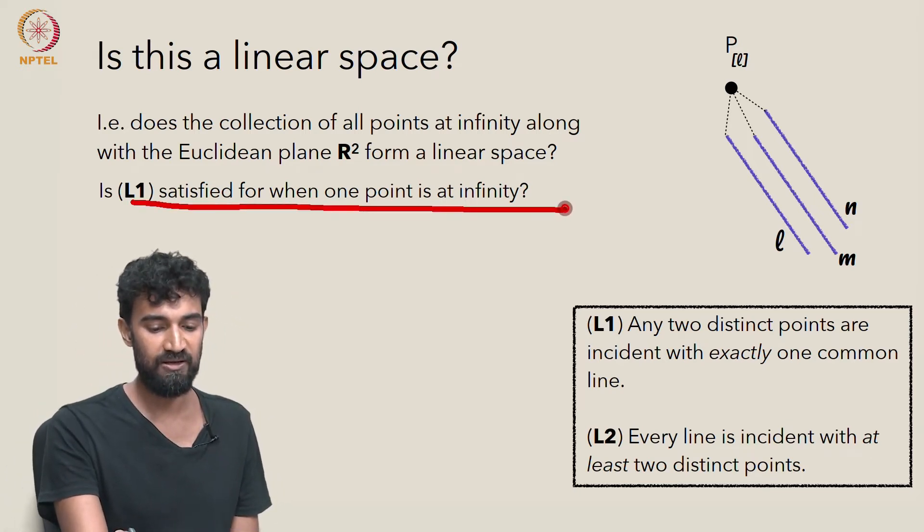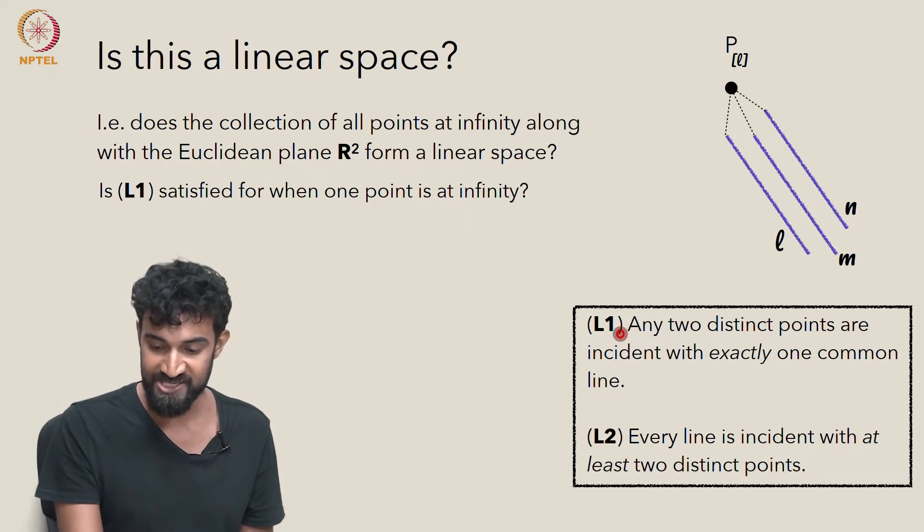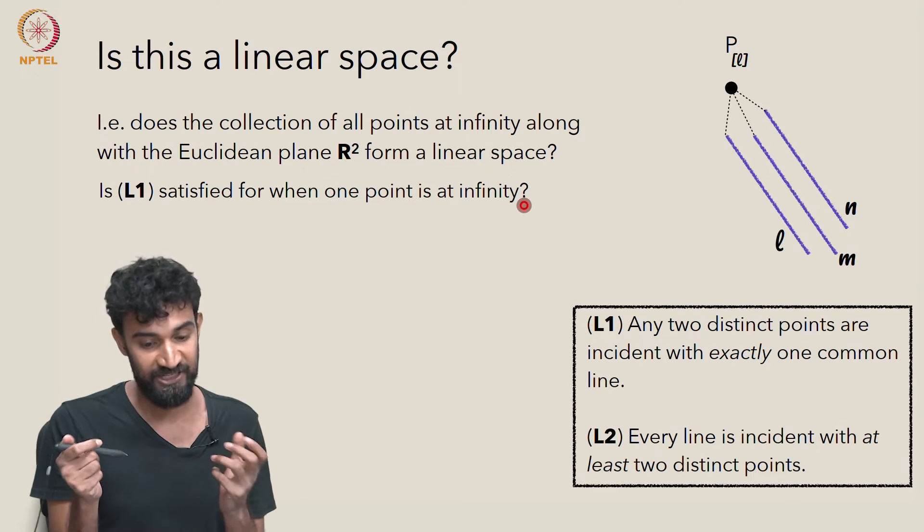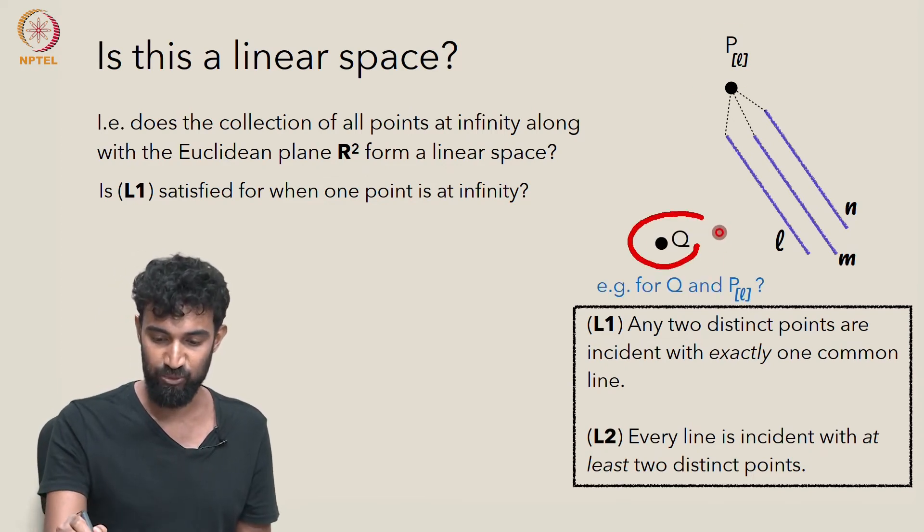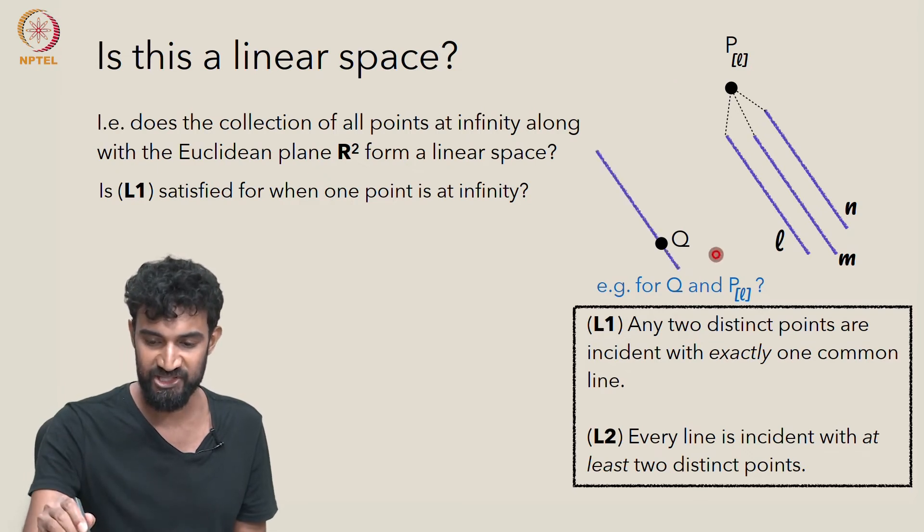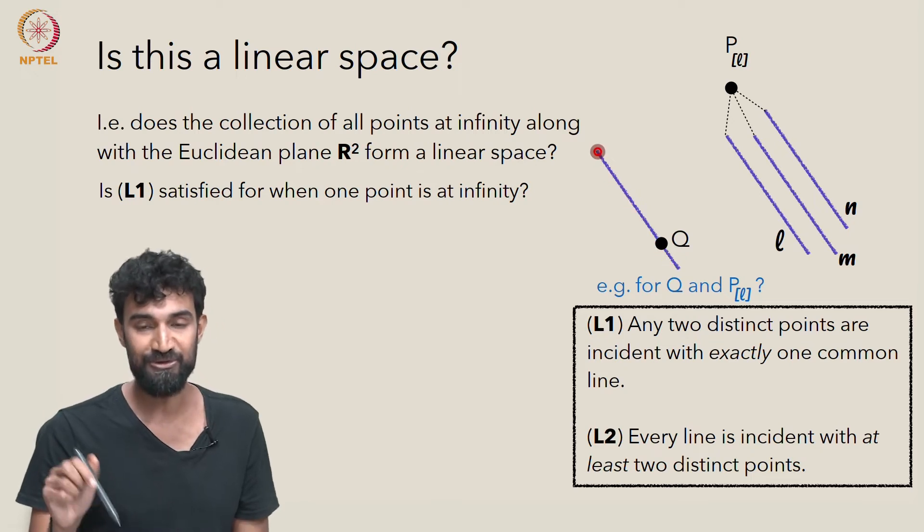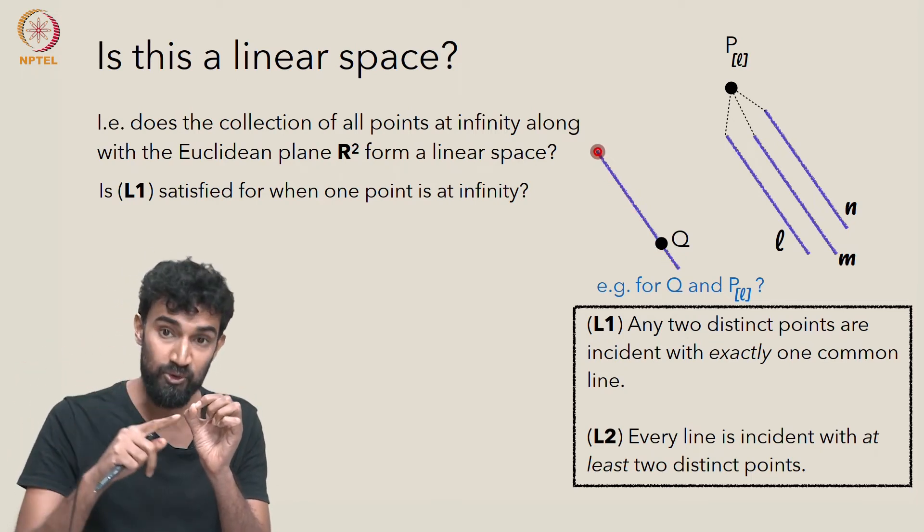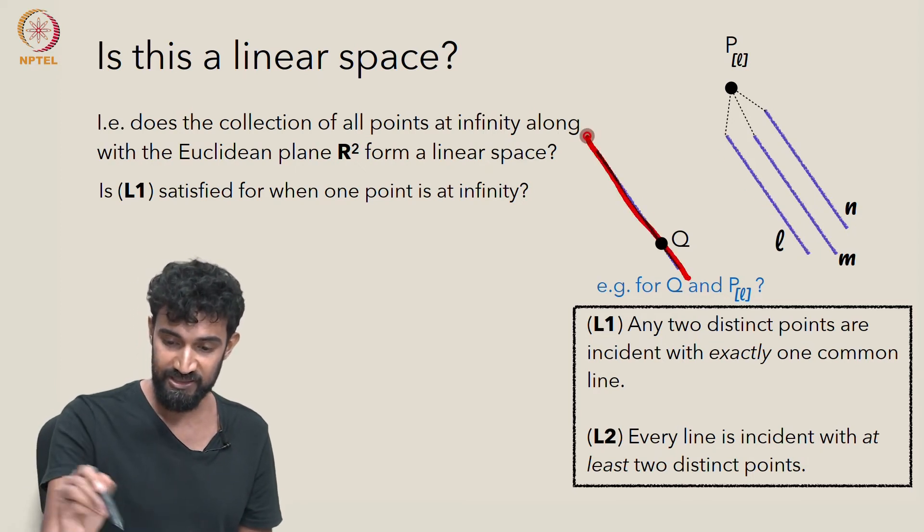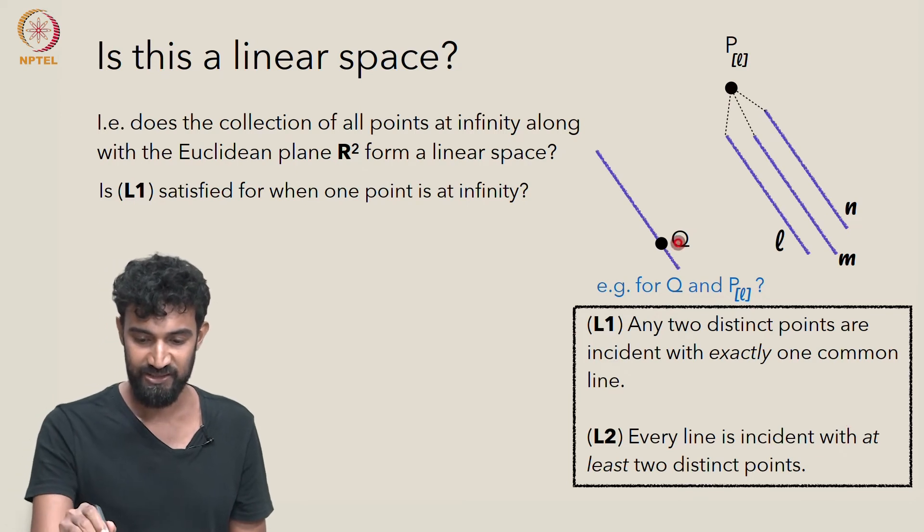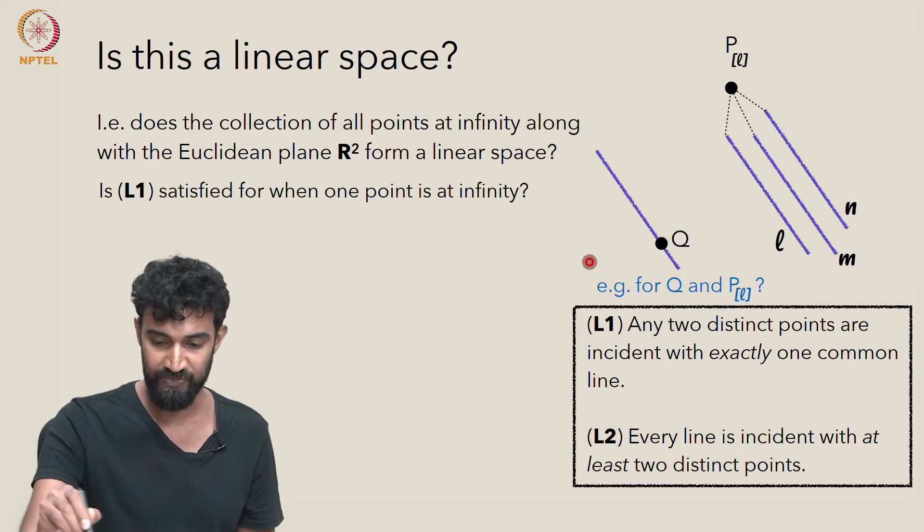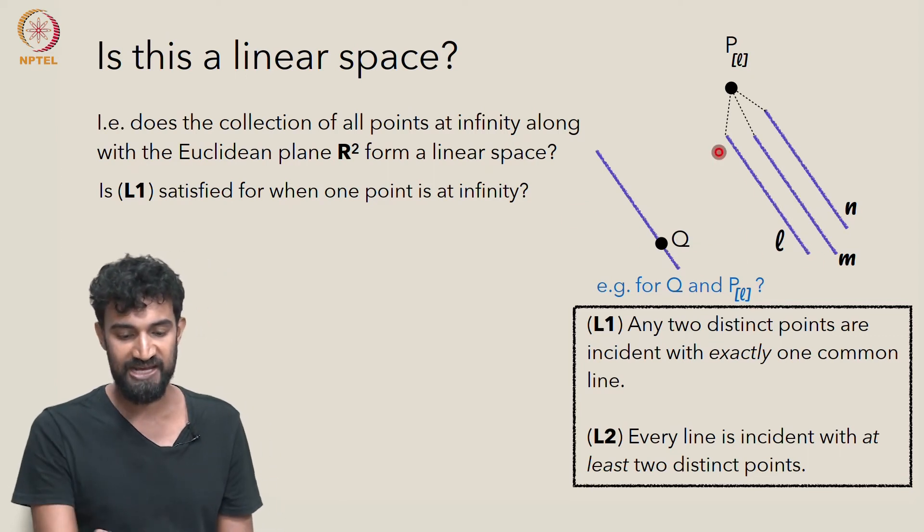Well, is L1 satisfied? L1 says that two distinct points have to determine a unique line. Is that satisfied when one of these points is at infinity? For example, here's a point at infinity, here's an ordinary point. So Q and PL, is there a unique line between them? Well, yes, it's just the line in this family that runs through Q. Remember, given a line at a point not on the line, there's a unique line through that point that's parallel to our original line. So we can definitely draw a parallel through Q to this line L. And that is going to hit PL. So, yes, and that's the only line through Q which is going to be in that family. Every other line through Q is going to be in a different family. It's not going to be parallel to L. So, yes, L1 is satisfied.